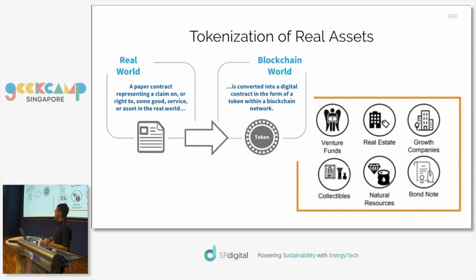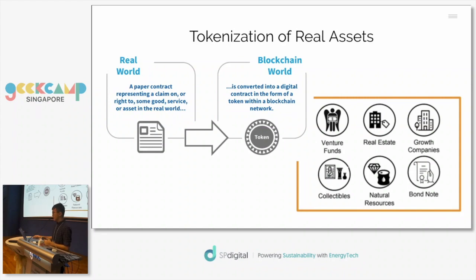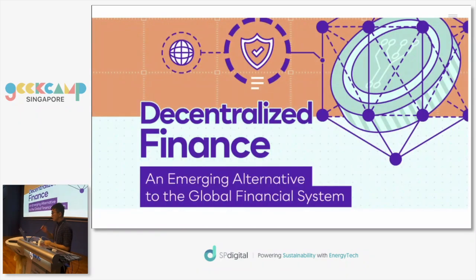We can also tokenize real-world assets — instead of digitally native goods, we could convert things like real estate, stocks, and commodities into tokens and get access to all kinds of services on the blockchain. This is still at very early stages.